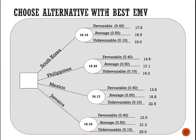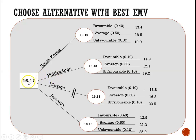Now we move on to the second step of folding back this decision tree: we make a decision by choosing the alternative with the best EMV, which in this case is the lowest cost. We are choosing between South Korea at an expected cost of 18.19, Philippines at 16.43, Mexico at 16.17, or Jamaica at 18.10. The lowest cost is Mexico at 16.17 million. We show our choice is Mexico by doing a double line on the tree, with an expected cost of 16.17 million. And here we have folded back the decision tree.